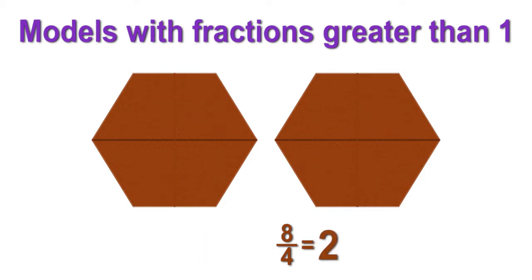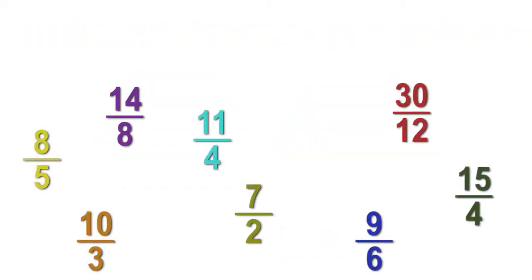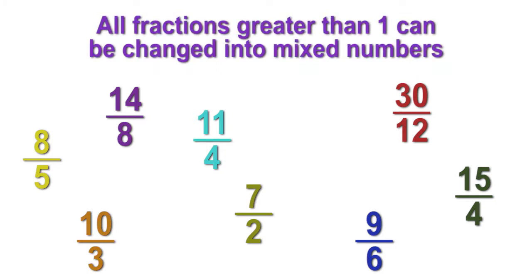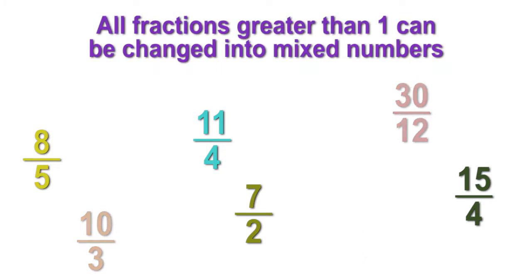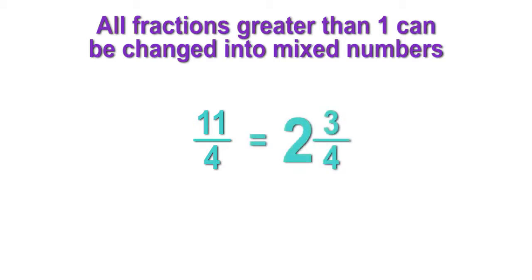Whenever there is a fraction equal to a whole number, it can be replaced with the whole number. Can we change all fractions greater than one whole into mixed numbers? Yes. When the fractions and whole numbers are added together, the result is called a mixed number. The whole number is written first, followed by the fraction.